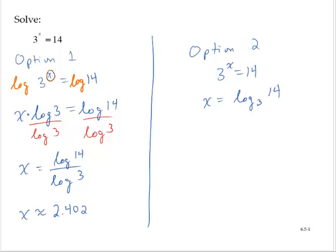And that is an exact value, but not very useful. It's tough to find 3 to what power gives 14. So we could say, using the change of base rule, that is the log of 14 divided by the log of 3, which is again approximately 2.402.